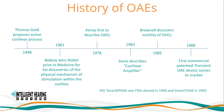In 1985, Brownell discovers motility of the outer hair cells. The outer hair cells contract with chemical, electrical, or acoustical mechanical stimulation. Contractions are synchronous with cochlear electrical activity. In 1988, the first commercial transient OAE comes to market. Intelligent Hearing Systems Smart DP OAE was FDA cleared in 1996, and the Smart Transient OAE module was cleared in 2002.